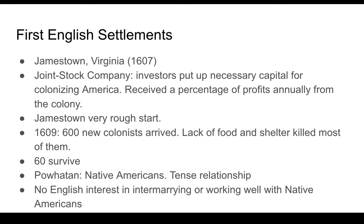Every year, the investors — those who put money up front — would get a percentage back and it would eventually become a profit for them. So there was an economic motivation for the founding of Jamestown. It was mainly originally for the growth of tobacco, and ideally they hoped to find gold, although they did not.